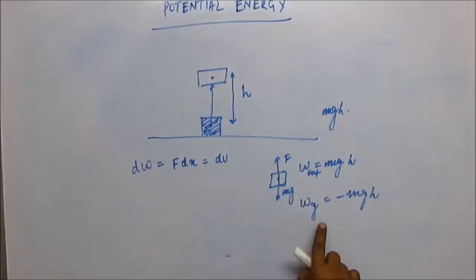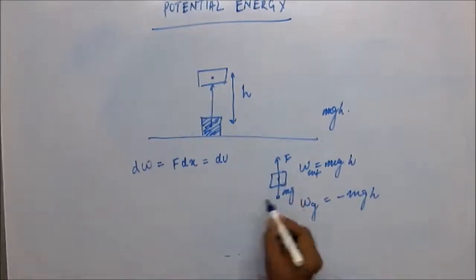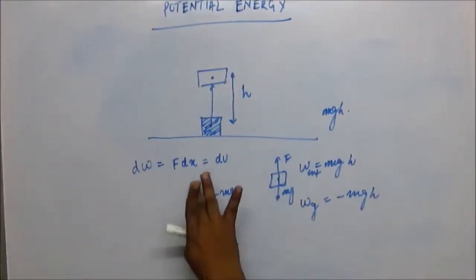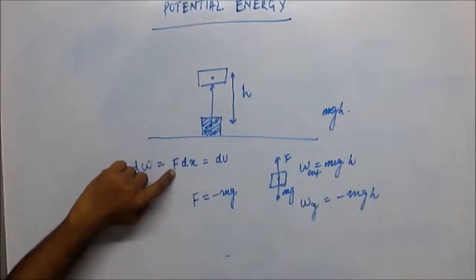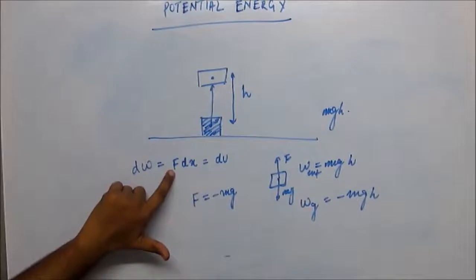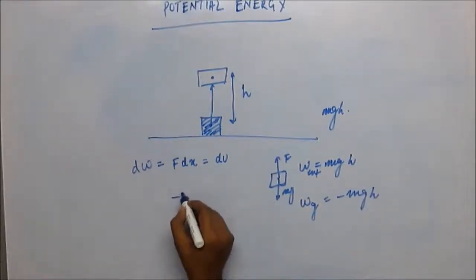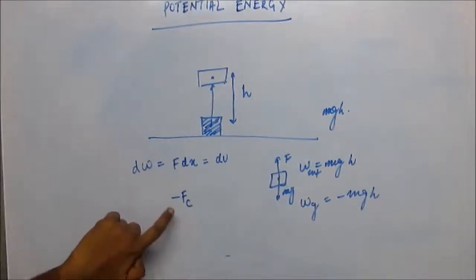Now, this external force — in a quasi-equilibrium state when the body is not gaining any velocity — the force should balance mg. These are vector quantities, so we always have to consider their signs. This force vector will always be equal to the negative of the force that the Earth is applying, so F equals minus mg vectorially. In a quasi-equilibrium state, this external force can be replaced by the negative of the internal conservative force, so we replace F by minus F_c.